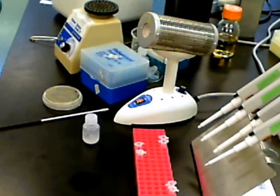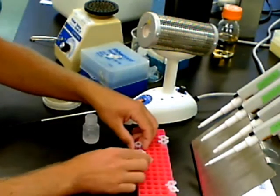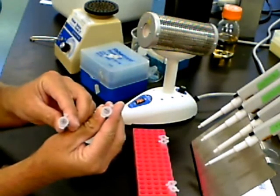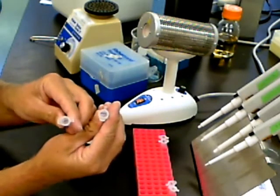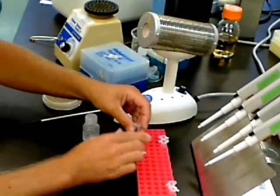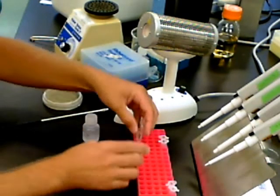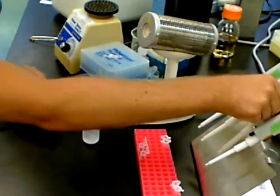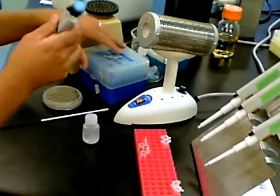To begin with, we need to label two microfuge tubes, one with a plus sign and one with a minus sign. The plus sign indicates that that's the tube we're putting DNA in, and the minus sign means we'll not be putting DNA in this tube. That will be the control tube, and the plus DNA tube will be our experimental tube.